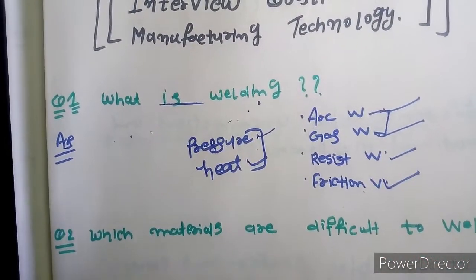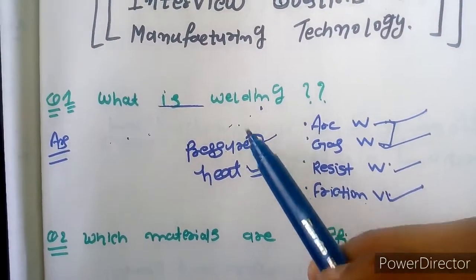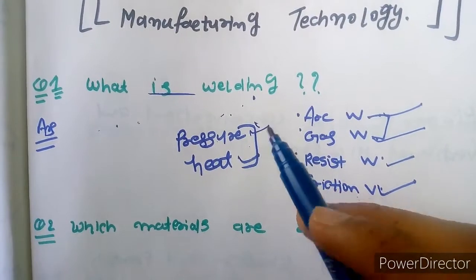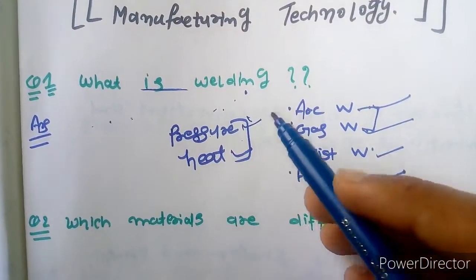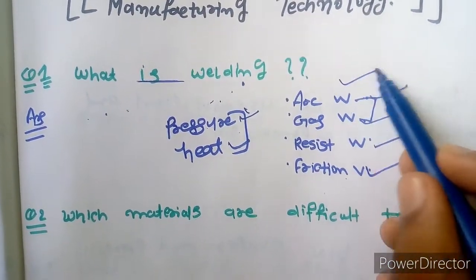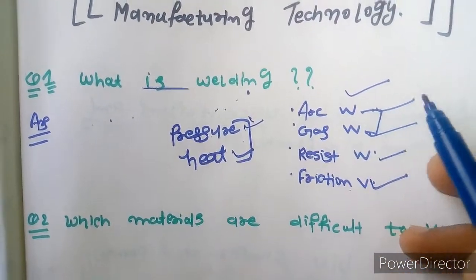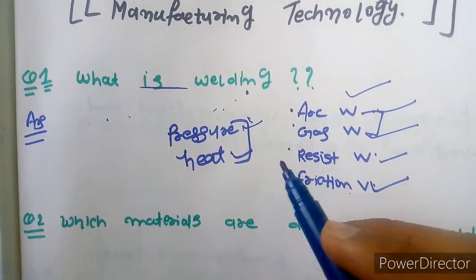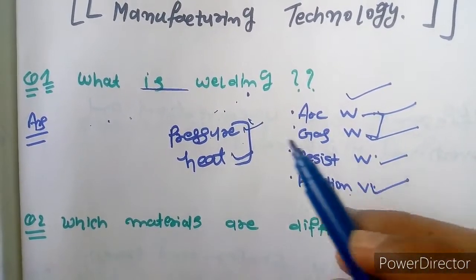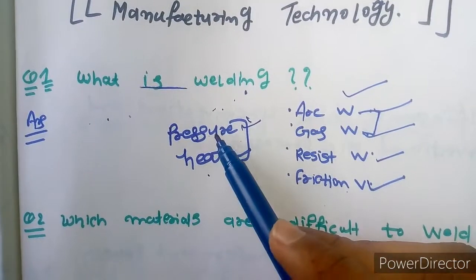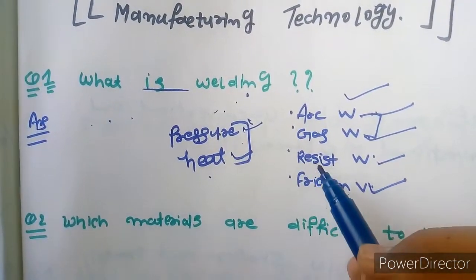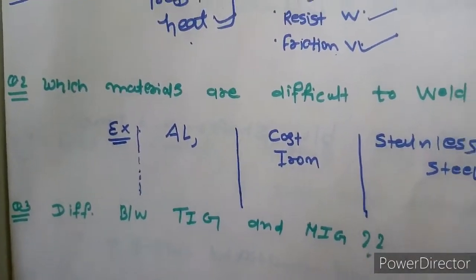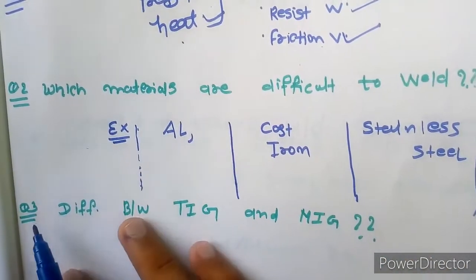Welding is a joining process where you join two plates with the application of pressure or heat. You should also tell the interviewer the types of welding process: arc welding, gas welding, resistance welding, and friction welding. In resistance welding, we do not require heat — only by pressurizing we can join two plates.